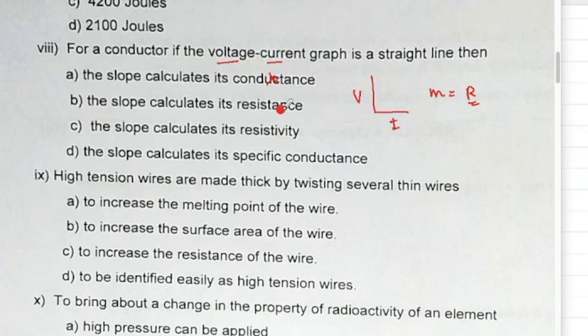High tension wires are made thick by twisting several thin wires because it increases the surface area and then dissipates the heat. This is the correct one - not increasing melting point, not increasing the resistance, to increase the surface area.